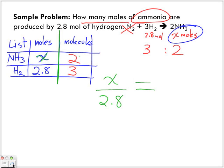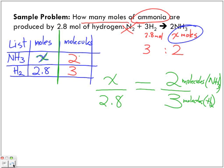And this ratio of 2 to 3 can be written as 2 over 3. So we have two molecules here - two molecules of ammonia over three molecules of hydrogen.